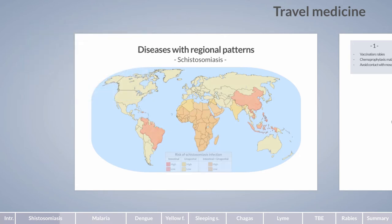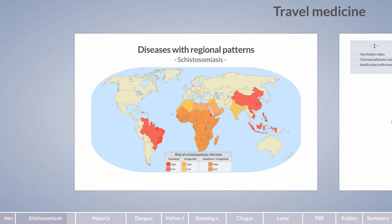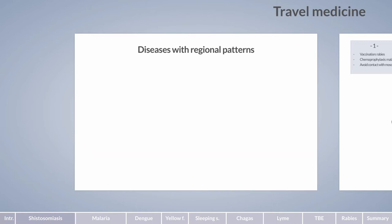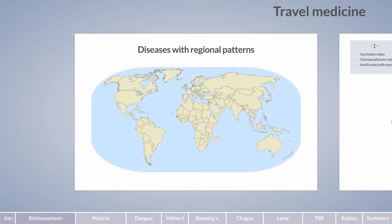The regional distribution of the different chronic forms depends on the distribution pattern of the parasite. Intestinal schistosomiasis is prevalent in South America and Asia, whereas urogenital schistosomiasis is more common in the Middle East and Northern Africa. Both forms are frequently observed in other regions of Africa. The only preventative measure is to avoid contact with fresh water in endemic areas. Schistosomiasis can be effectively treated with the anthelmintic praziquantel.